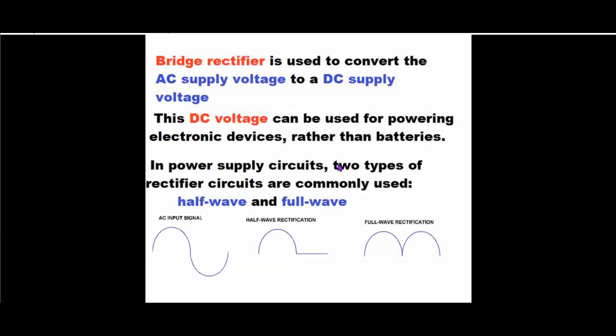Today, we will discuss how to convert an AC signal to a DC signal, that is alternating current to a direct current.